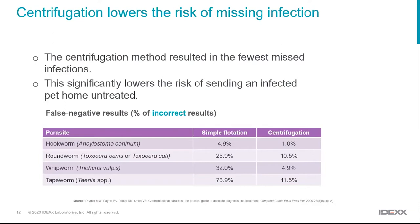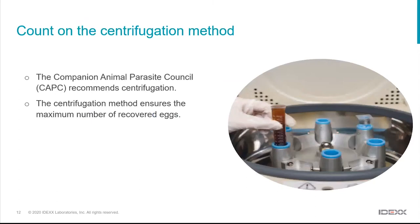Even though it means sending the sample to a laboratory, the advantages are clear. No one likes doing faecal floats in clinic — they're smelly, messy, and can damage microscopes. Sending samples to the lab means trained scientists perform a higher-sensitivity technique, so we pick up more infections. Based on CAPC recommendations, the centrifugation method maximises the number of eggs recovered in faecal parasitology.